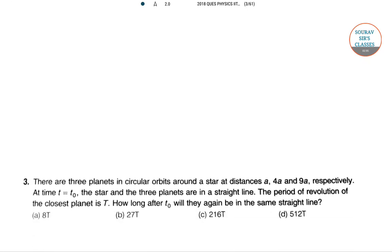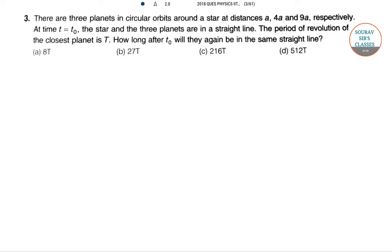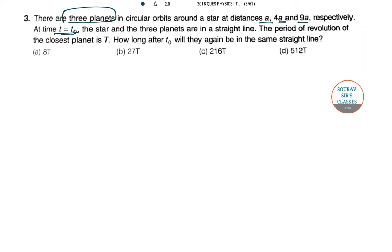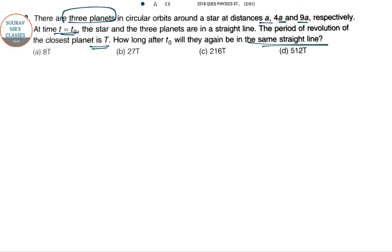Let's move to the next question. There are 3 planets in circular orbits around a star. The orbital radii are A, 4A, and 9A. At time t equal to t₀, the star and all 3 planets are on a straight line. The period of revolution of the closest planet is T. How long after t₀ will they again be on the same straight line? Let's draw a diagram to understand this.